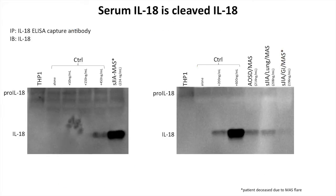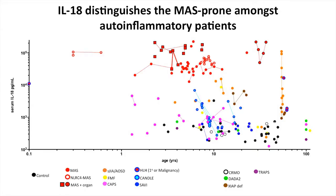The IL-18 we're measuring in serum is cleaved. If you immunoprecipitate it from serum — which requires a lot of serum from a little baby — it runs at the same molecular weight as recombinant IL-18. As for free IL-18, those that have any measurable free IL-18 are basically in this MAS group. You have to have really quite high levels of total IL-18 circulating to have any free IL-18.